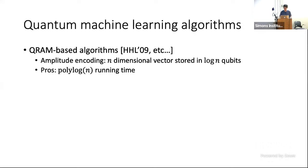Let's start with a high-level overview of quantum machine learning algorithms. By quantum machine learning, I mean that we want to use quantum computers to speed up classical machine learning problems. And there are many other schemes to think about quantum machine learning, such as in Robert's talk where the data could be generated quantumly.